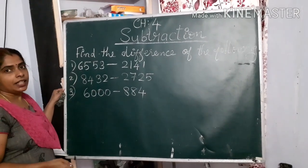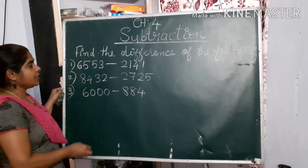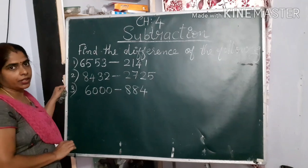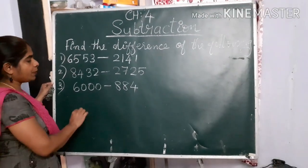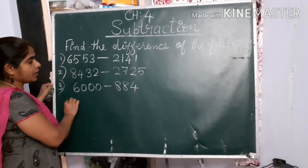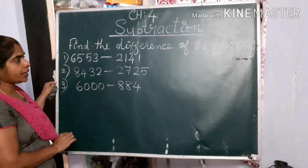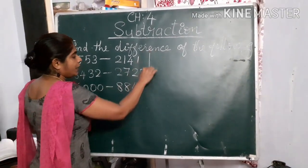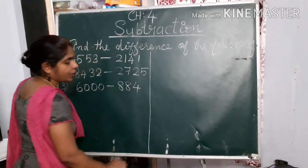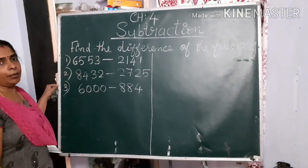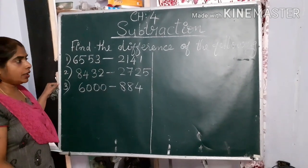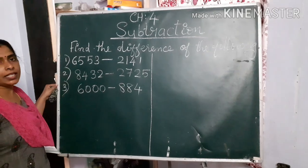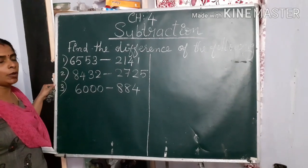What is the meaning of difference? Difference means the answer after getting subtraction is called a difference. When you subtract two numbers, keep in mind: first we will write the biggest number. Always we can subtract a smaller number from a bigger number only — we can't subtract a bigger number from a smaller number.